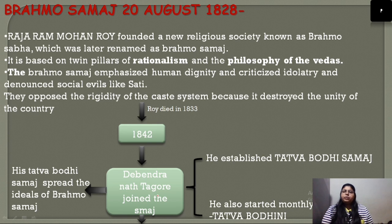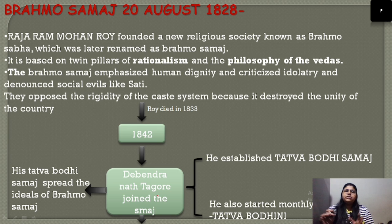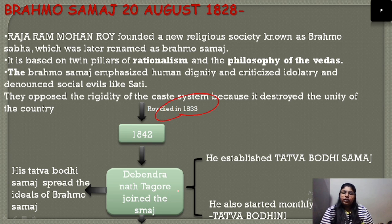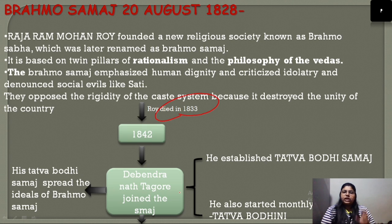After Raja Ram Mohan Roy's death in 1833, the Brahmo Society continued to exist and spread its message. In 1842, Debendranath Tagore joined the Brahmo Society, taking an active role in its development and spreading its teachings.